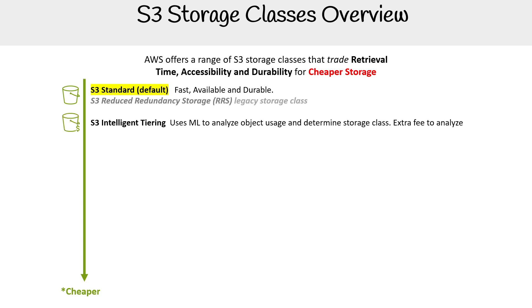Then we have S3 Intelligent Tiering, which uses machine learning to analyze object usage and determine the appropriate storage class. This is great if you have a lot of objects that are not being optimized, and if you don't mind being charged an additional fee to analyze the objects, it could definitely save you money.